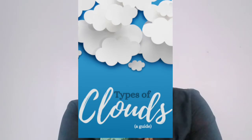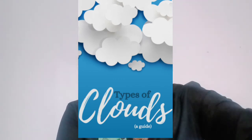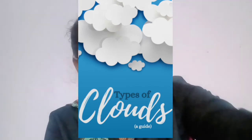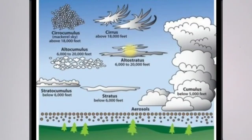Due to the presence of cumulus clouds, weather becomes pleasant. However, due to the vertical expansion of these clouds, they form into cumulonimbus clouds and bring rain with storms, and sometimes hailstorms. Such rainfall due to cumulonimbus clouds does not remain long lasting.